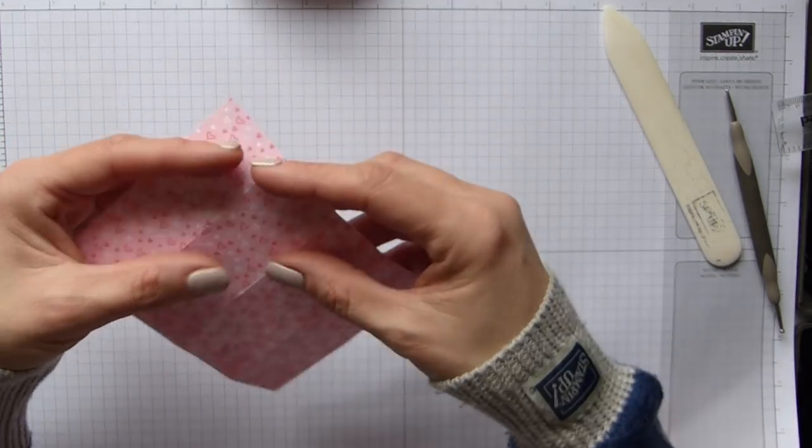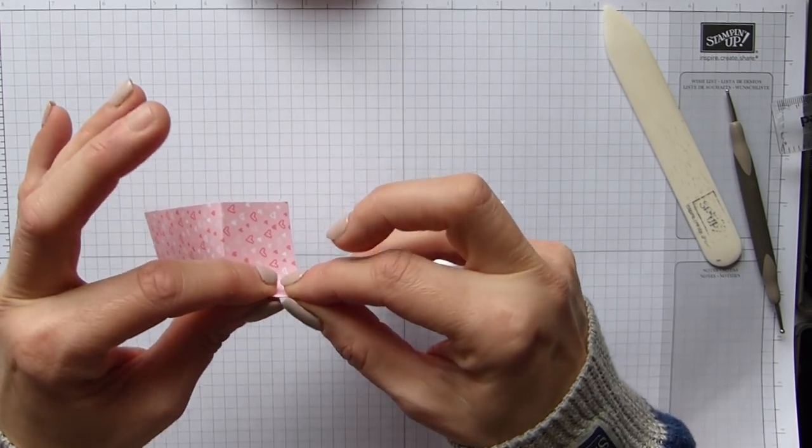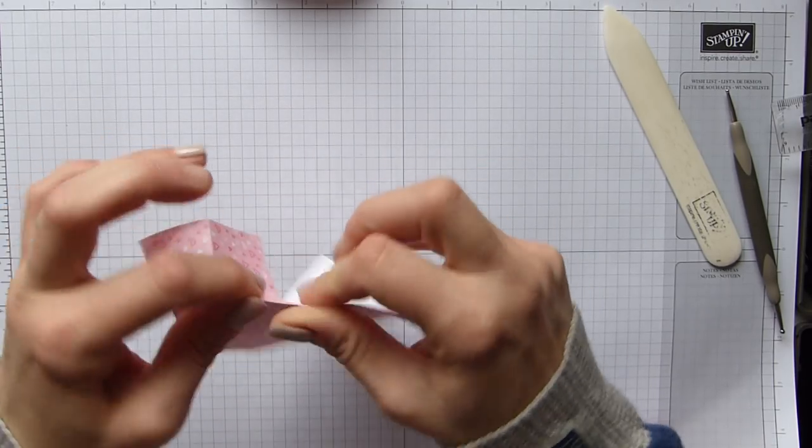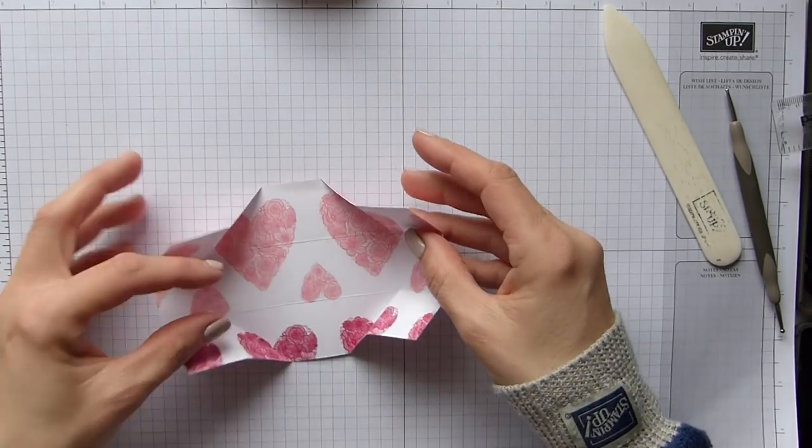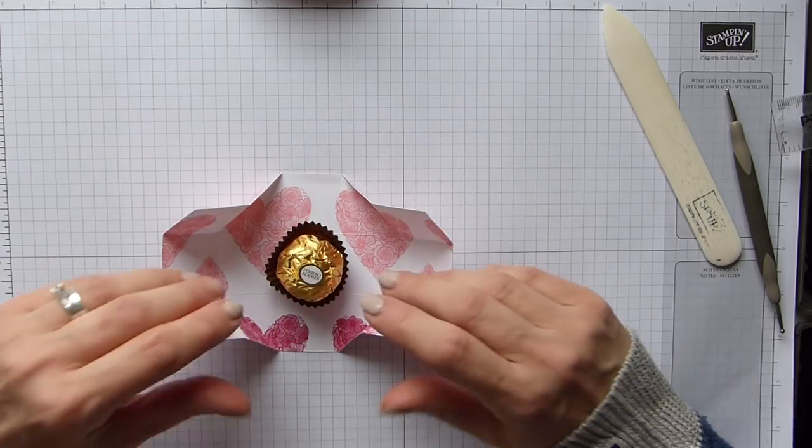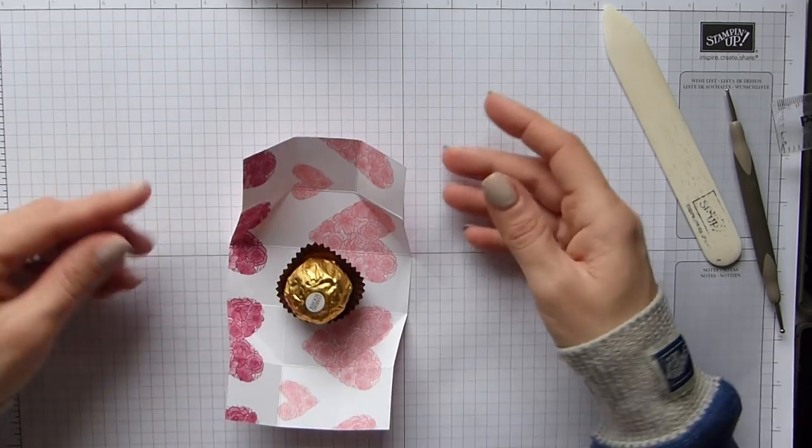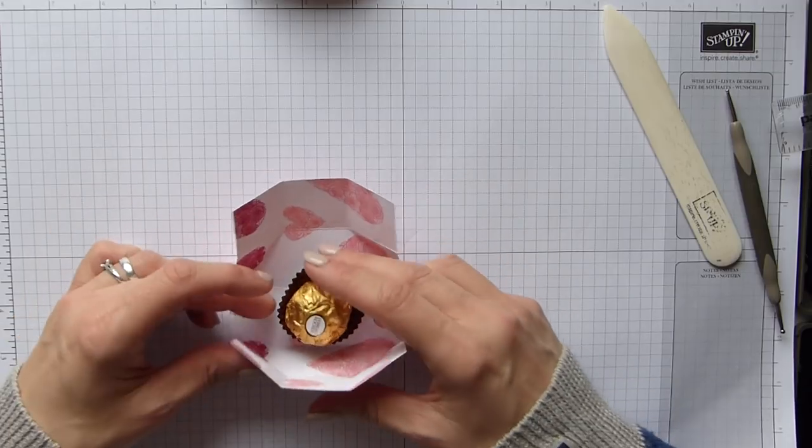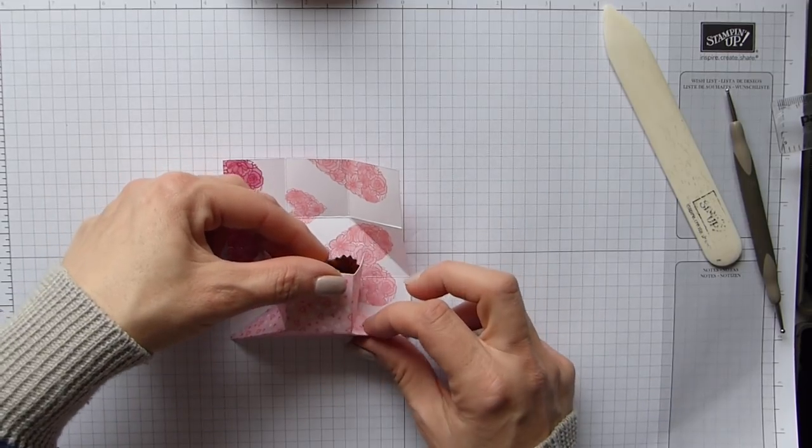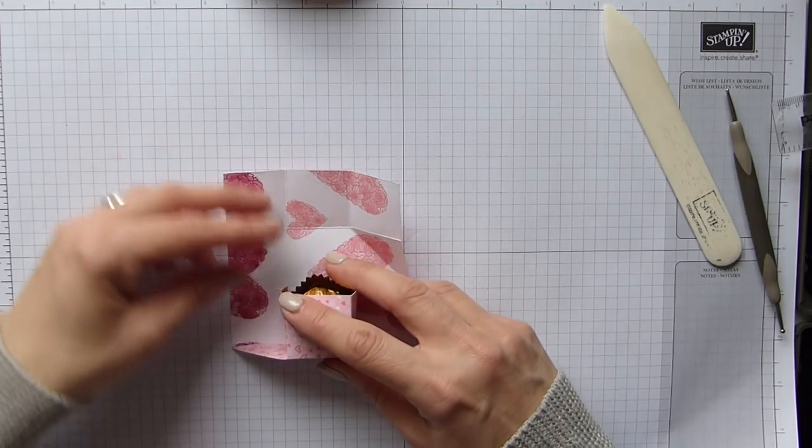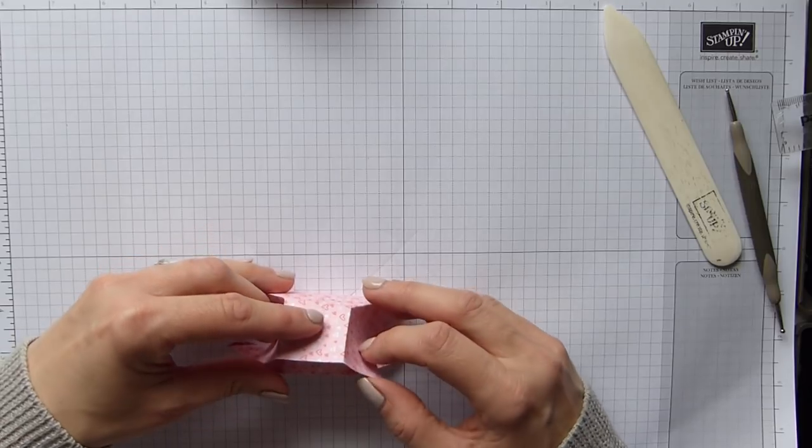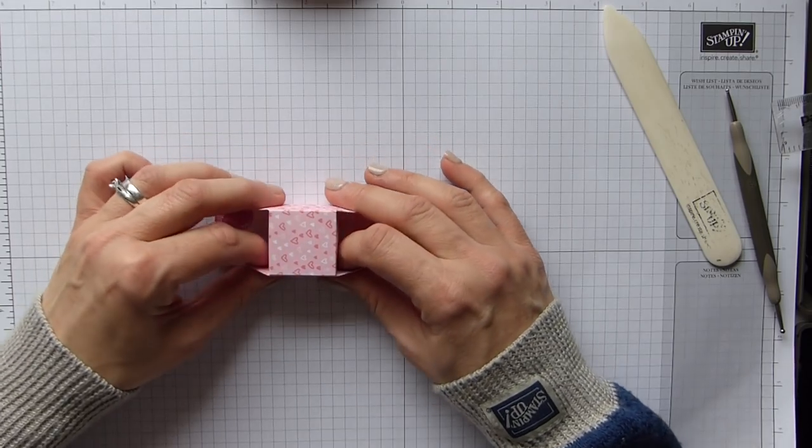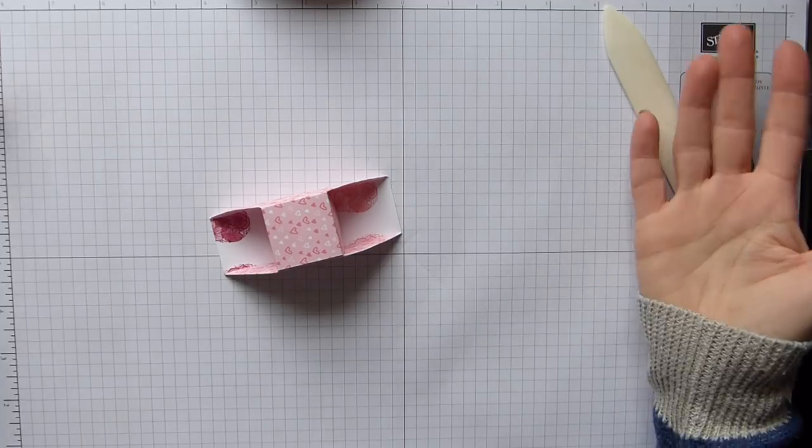So we've folded all of that up and then we just need to give these little diagonal score lines a nice little press just to reinforce them. And then we're simply going to pop our chocolate in the center and then get it the right way round. So with this there's long sides either side, you're simply going to fold the front up and over here and you can see that these are already going the way they want. And then this one exactly the same, up and over, and then you just sort of pinch at the triangles.